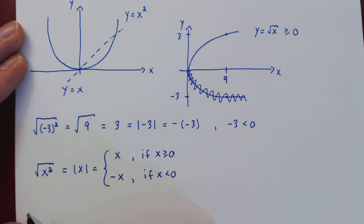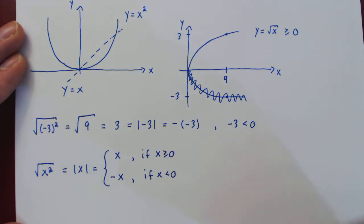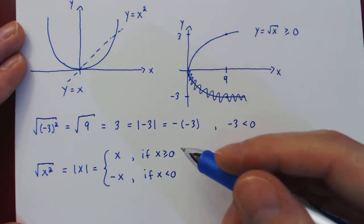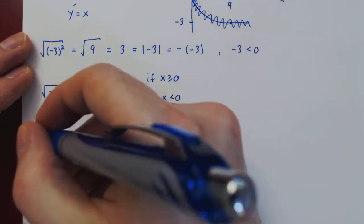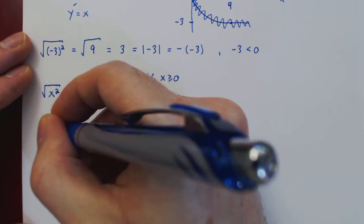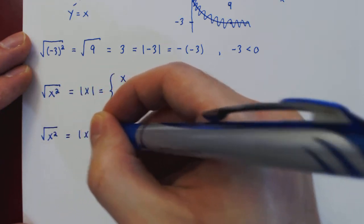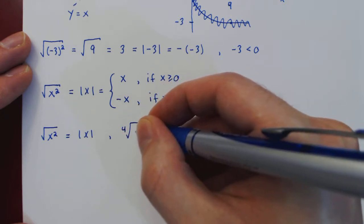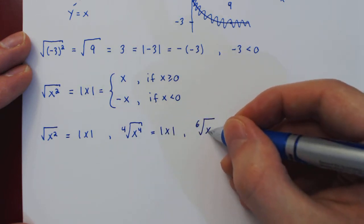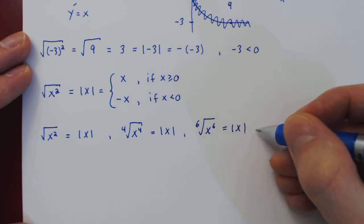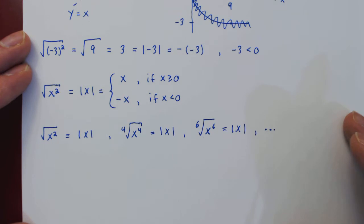This is not unique to the square root function — it is true of any even root of the corresponding even power. An even power of a negative becomes positive, and since we always pick the positive branch of even roots to have functions, an even root of the corresponding even power returns the absolute value. So in general: the square root of x squared is the absolute value of x, and the fourth root of x to the fourth is also the absolute value of x.